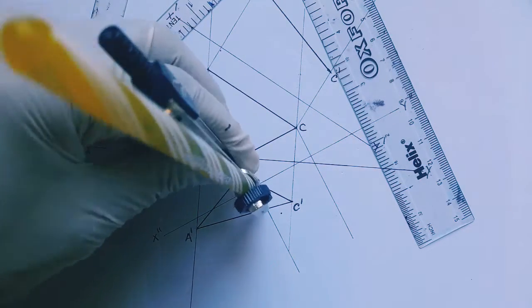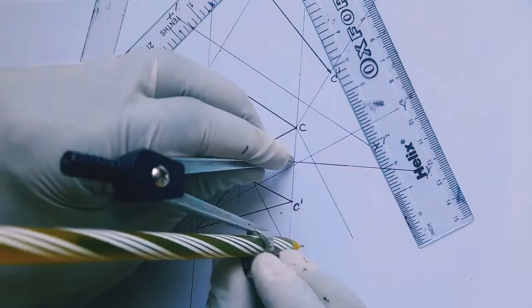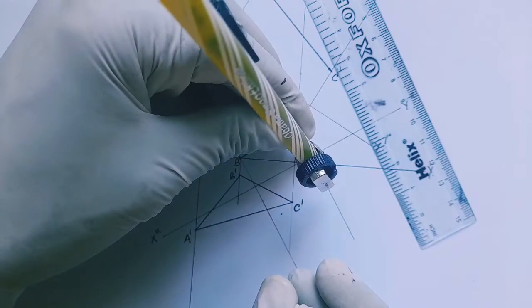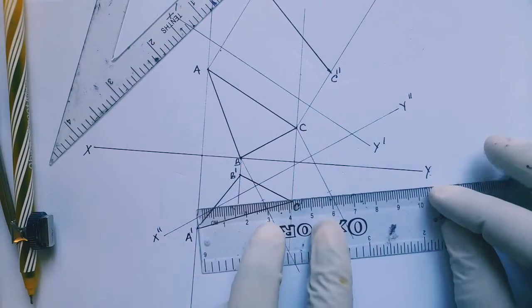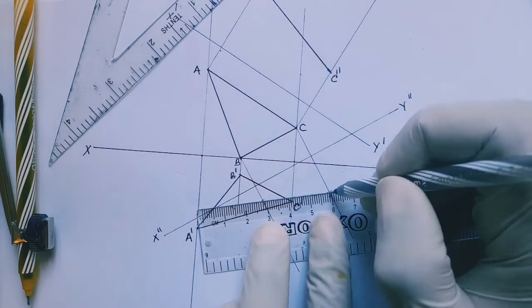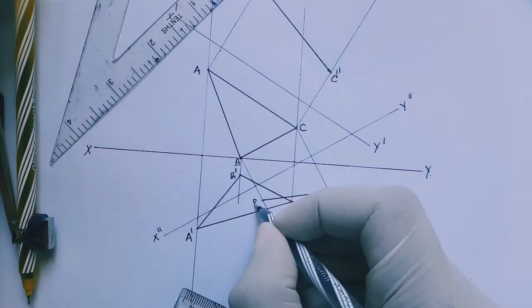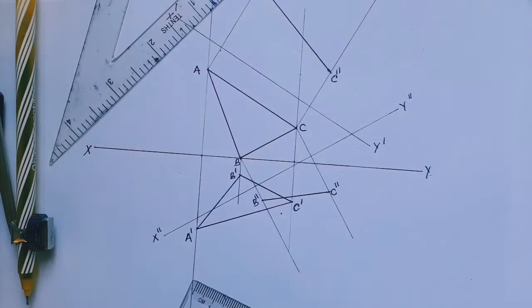From the X double prime, we carry C prime again and locate it here using the X double prime Y double prime. Then we join the two points. So these are true lengths for BC. We can name it as B double prime C double prime.